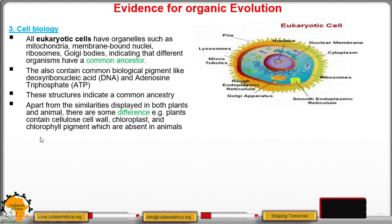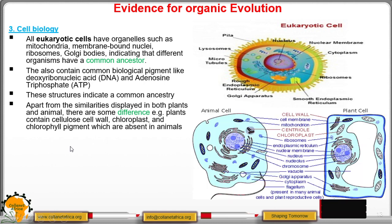Chlorophyll is a pigment where the process of photosynthesis takes place — it traps light energy. Cellulose is a material found in cell walls and it prevents cells from bursting, which is why plant cells do not burst when immersed in a water or distilled solution. A plant cell has a cell wall which is absent in an animal cell. An animal cell only has a cell membrane, which is also present in a plant cell, and all other organelles are common to both.